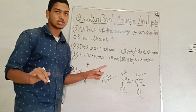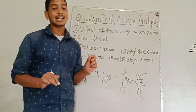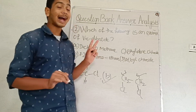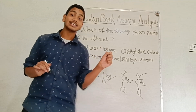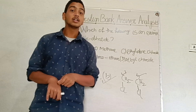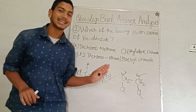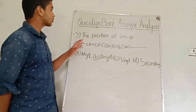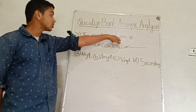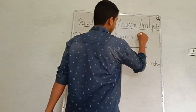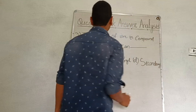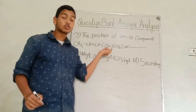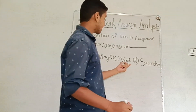This is the definition of the vicinal dihalide: compounds in which two halogen atoms are attached to two adjacent carbon atoms. This is the definition of vicinal dihalide compounds. Give me a compound — the position of the domain in compound — combined or primary or secondary.